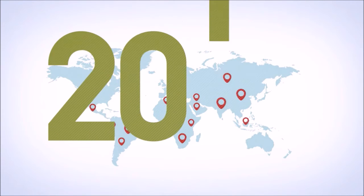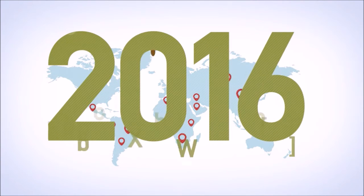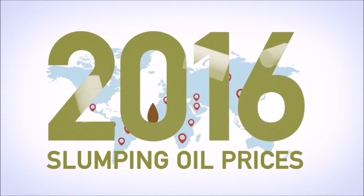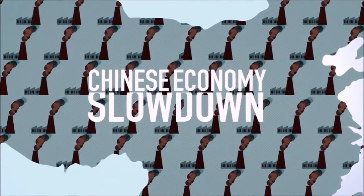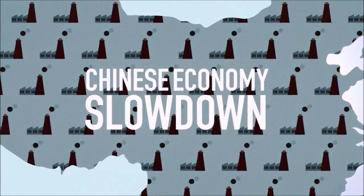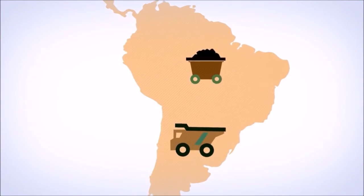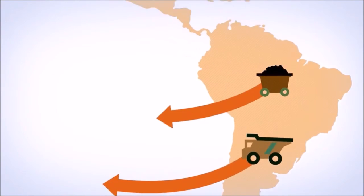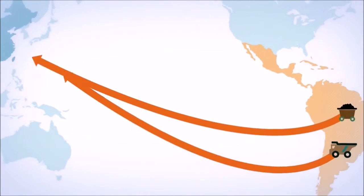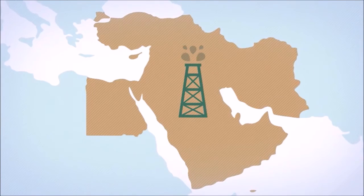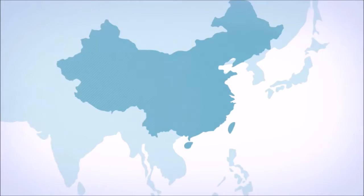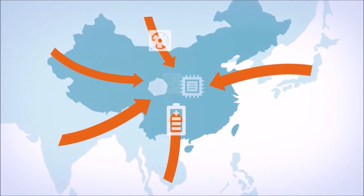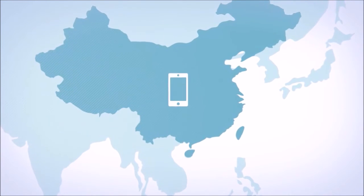Logistics industry executives are braced for more volatility in 2016. Their biggest concerns are slumping oil prices and a slowing of the world's second largest economy, China. China is a leading investor in emerging markets and buys minerals and metals from Latin America and Africa, energy from the Middle East and Russia, while other Asian countries make parts for goods that are assembled or finished in China, then exported.